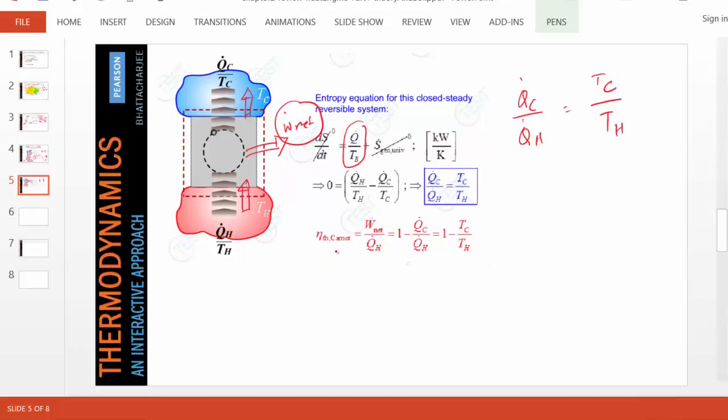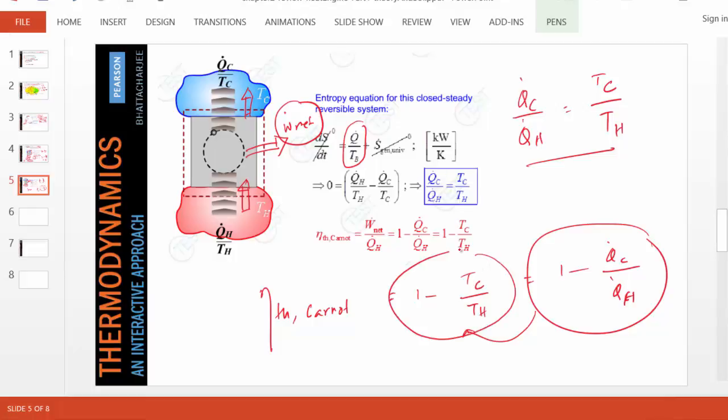If you go back to our formula for thermal efficiency, we can substitute this relation and get a very simple formula for the thermal efficiency of a reversible perfect engine, which is called the Carnot engine. It is 1 - T_C/T_H. Of course, this formula, 1 - Q̇_C/Q̇_H, is always valid for any engine. For a Carnot engine, it reduces to this simple formula.